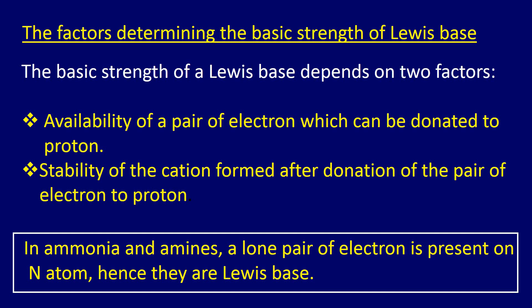Now, Lewis bases. Lewis bases contain the lone pair of electrons that can be donated to a proton. The basic strength of a Lewis base depends on two factors: number one, the availability of the pair of electrons which can be donated to a proton — because if the availability of electrons is more, they can donate easily; number two, the stability of the cation formed after donation of the pair of electrons to a proton. Ammonia and amines have a lone pair of electrons on the nitrogen atom, so they are Lewis bases.